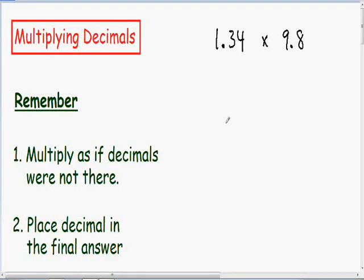So now I want to go over multiplying decimals. You're about to find out that multiplying decimals is very similar to multiplying regular whole numbers. So here we have 1.34 multiplied by 9.8. I'm going to write them on top of each other. We have 1.34 being multiplied by 9.8.